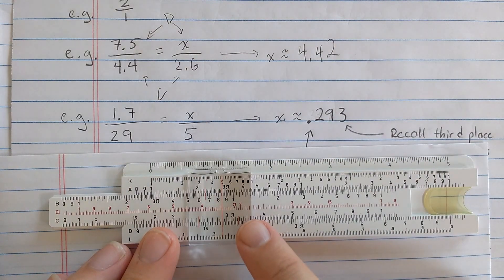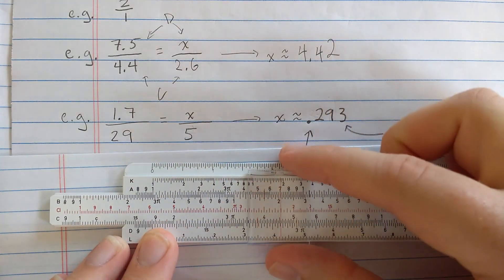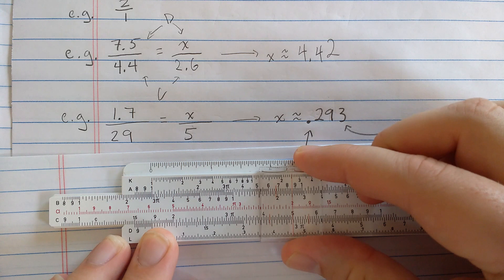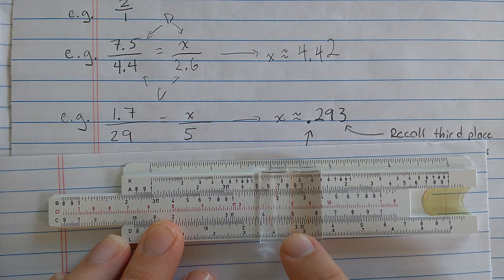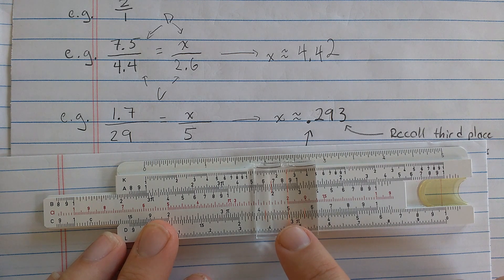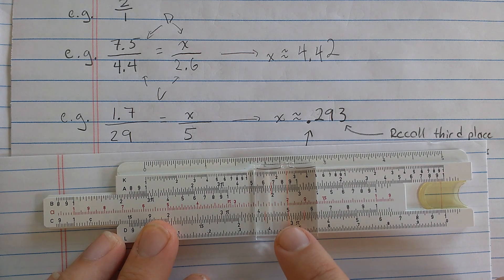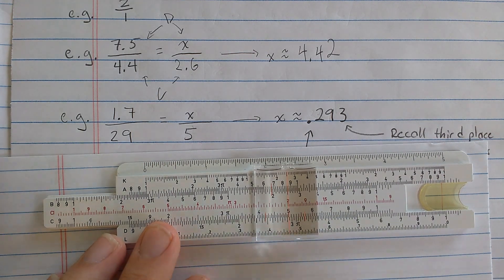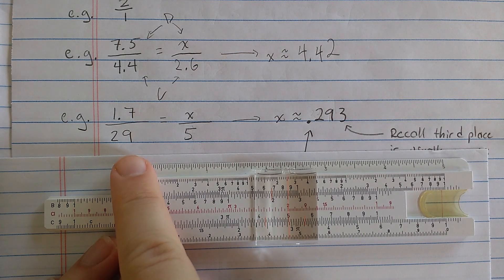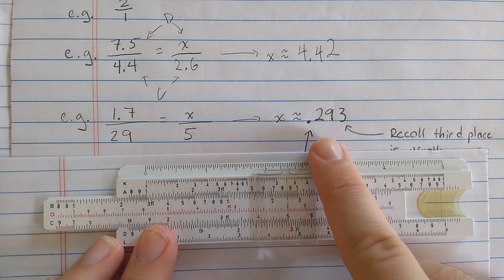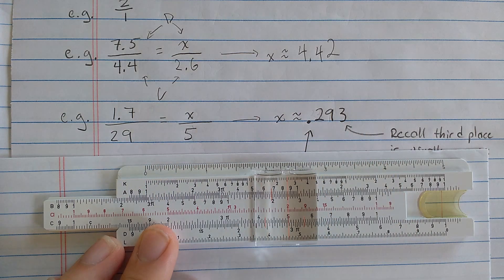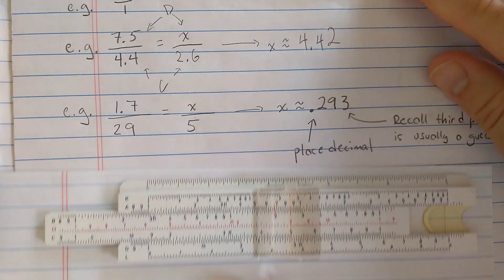Then, I'll look on the C scale for the 5. There it is. And read the other number of the proportion. You can see here, it's about 2.93 as I estimated before. But, of course, since this was a 29, right, the correct setting of the decimal point here is before the 2. So 0.293 instead of 29.3.